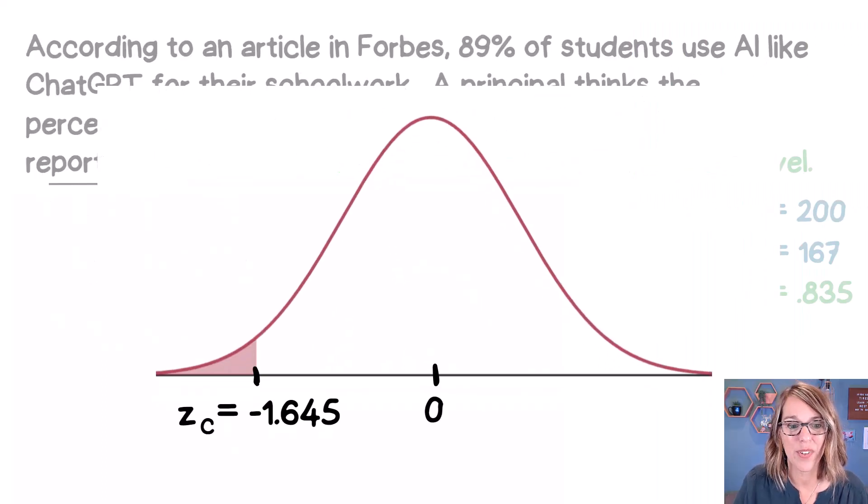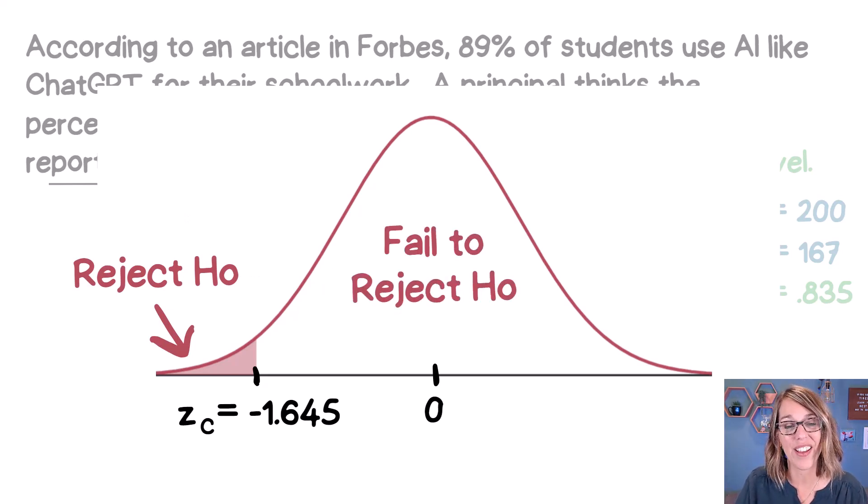Let's bring up that normal curve. Now I found that critical value and that cuts off that area of 0.05. That's our significance level, which is alpha. This is our rejection region. And if we're on the other side in our unshaded area, that's going to be our fail to reject region. So we really need to find what the Z score is for our sample percentage, our sample proportion of 0.835.